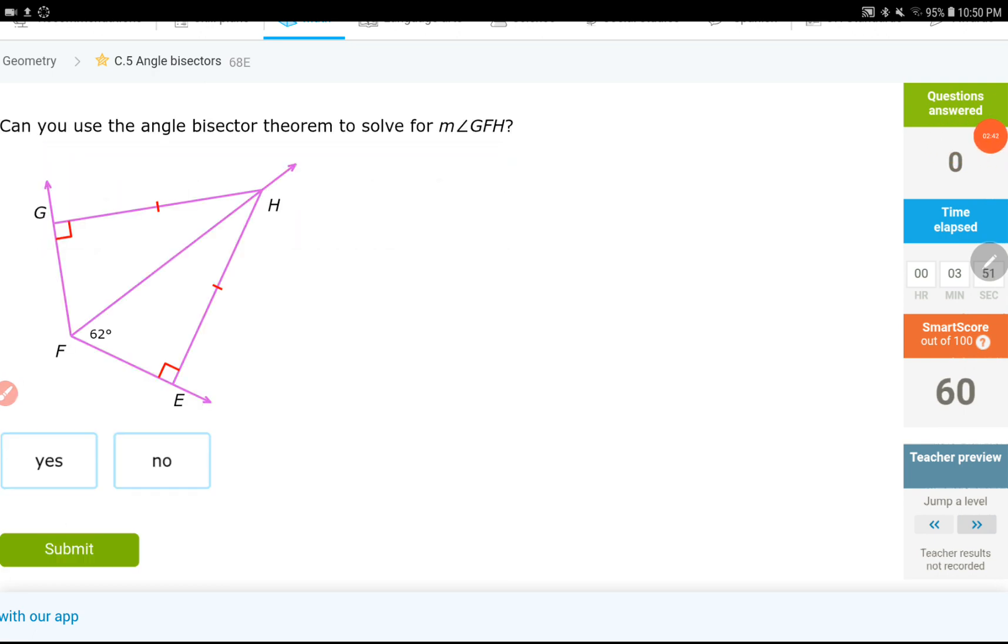Now, let's check this question out. Can you use angle bisector theorem to solve for angle GFH? Okay. Yes, angle GFH. If this is... configure that one out. That would be equal to 62. Here is why. This would be yes.